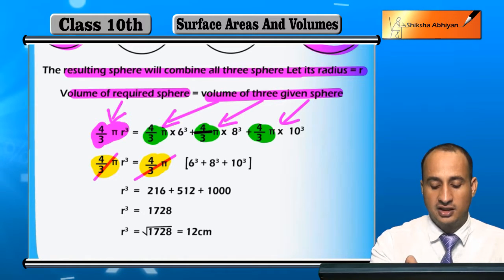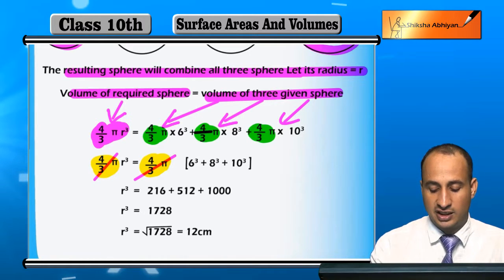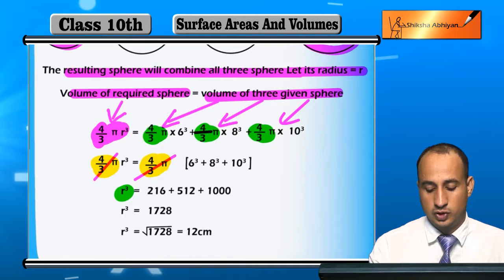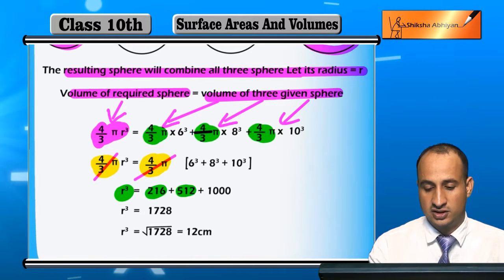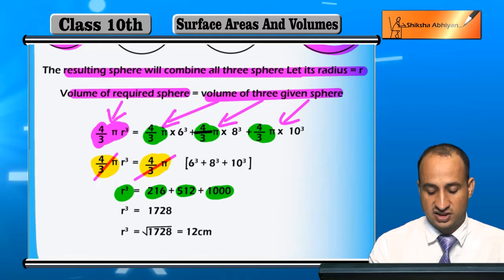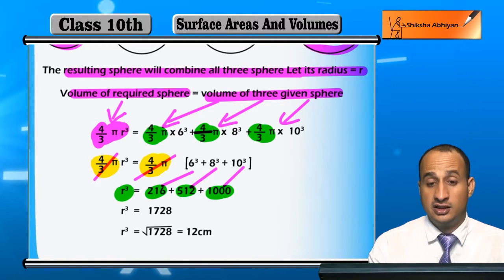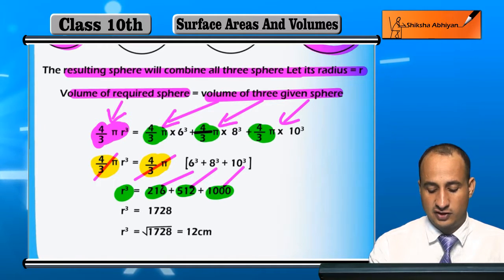So r³ equals 6³ plus 8³ plus 10³. Calculating: 6³ is 216, 8³ is 512, and 10³ is 1000. When we sum these, we get 1728.